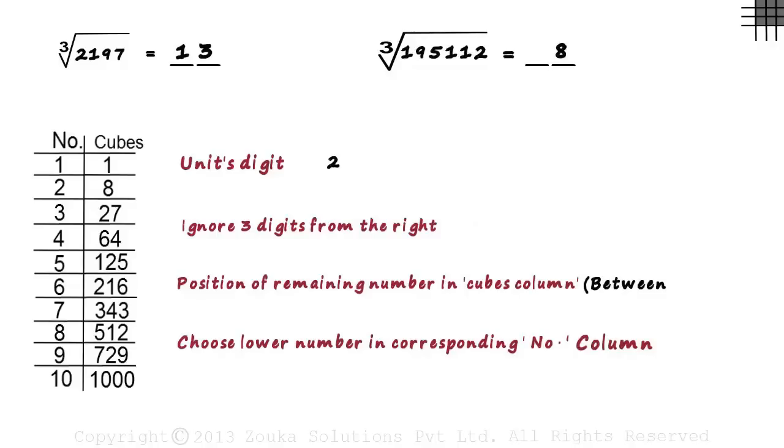Now we ignore 3 digits from the right. That is 112. And what remains is 195.